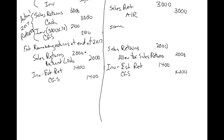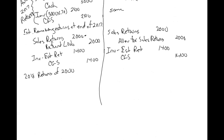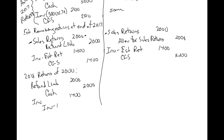Now let's jump ahead to 2018 returns of $2,000. Let's assume the $2,000 we estimated is now returned. We've already recorded the return up here on both sides, so we don't need to do another sales return entry. On the cash sales side, we reduce the refund liability we recorded, give them their cash back, and accept back the inventory — zeroing out the inventory estimated returns account of $1,400.